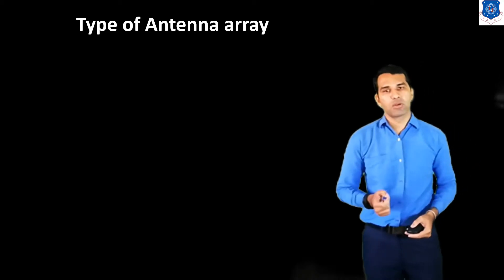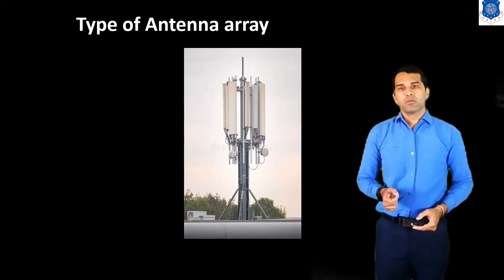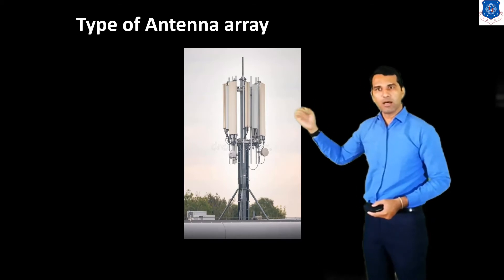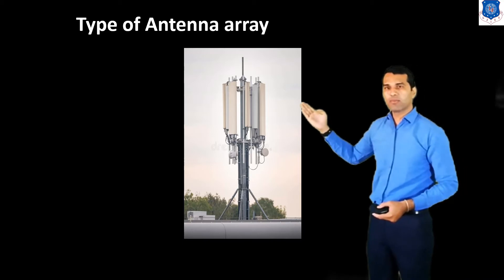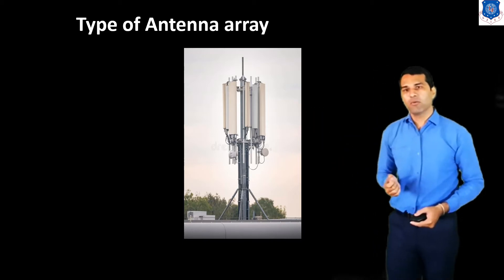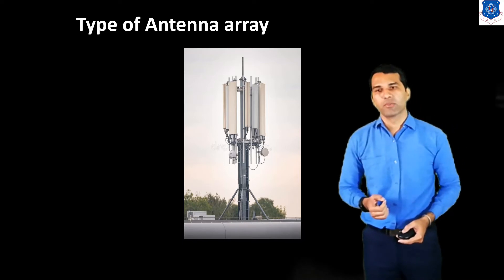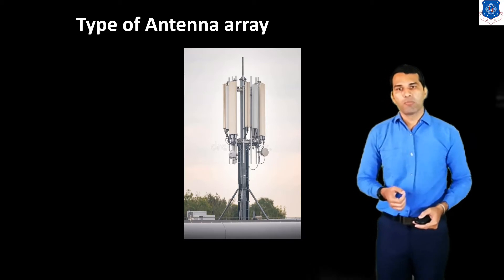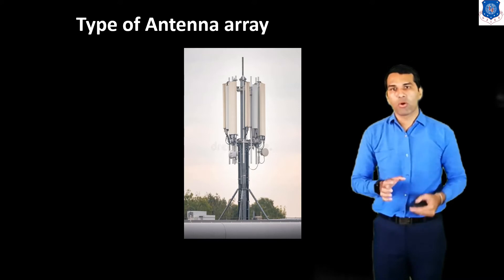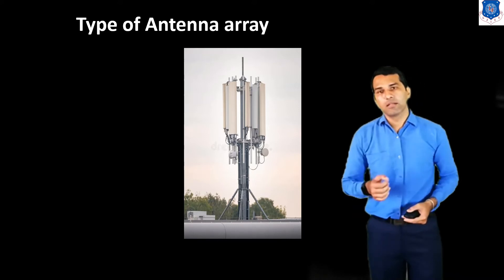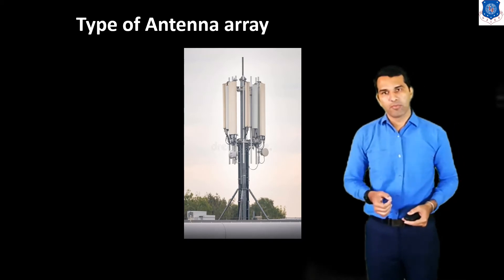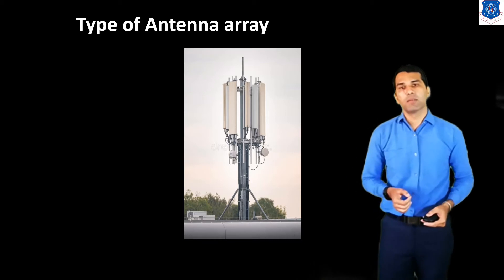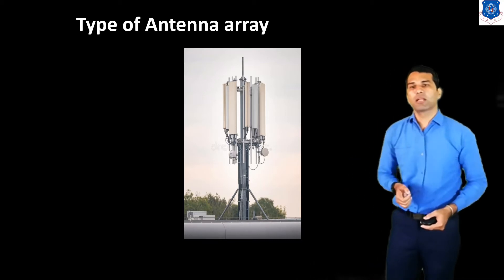Now we discuss about the different types of the array. Here is a figure of a mobile antenna — we can see four different antennas have been placed. This is nothing but using different antennas to transmit and receive. Generally, when we require more gain or directivity, a single element antenna is not capable of producing the desired directivity or gain, so we use the antenna array. There are other applications of the antenna array as well, like in MIMO — multiple input, multiple output — they also use the array concept.